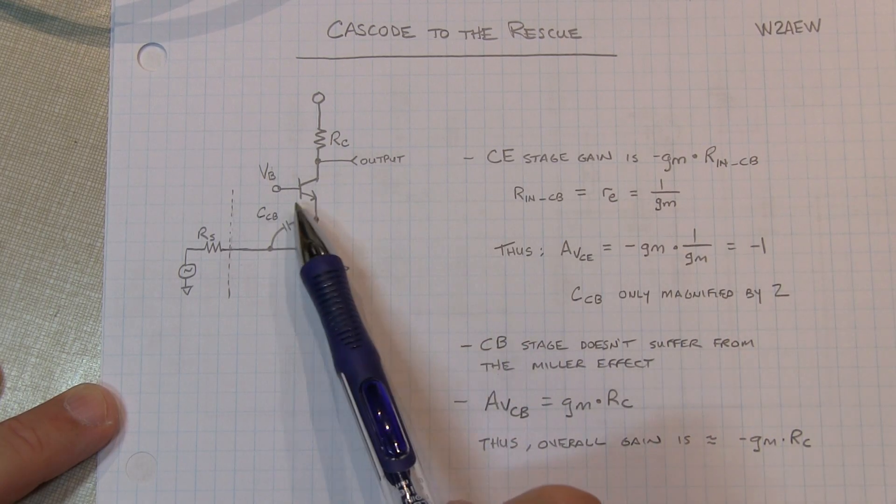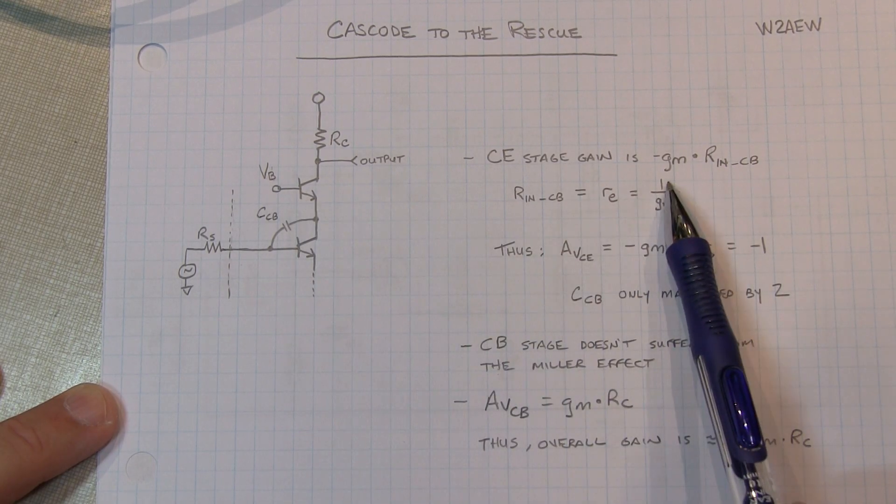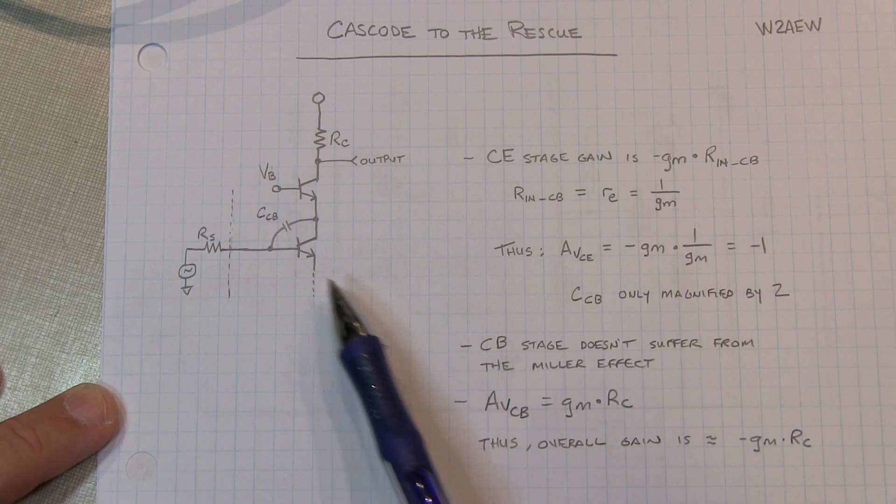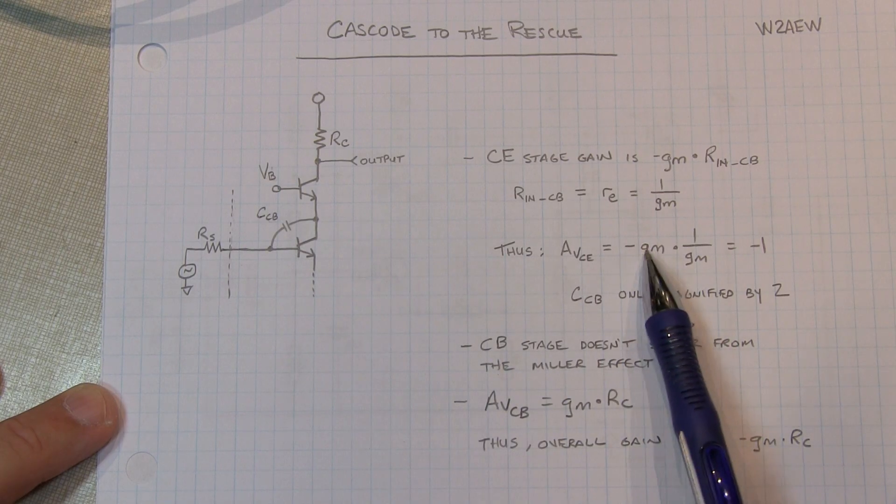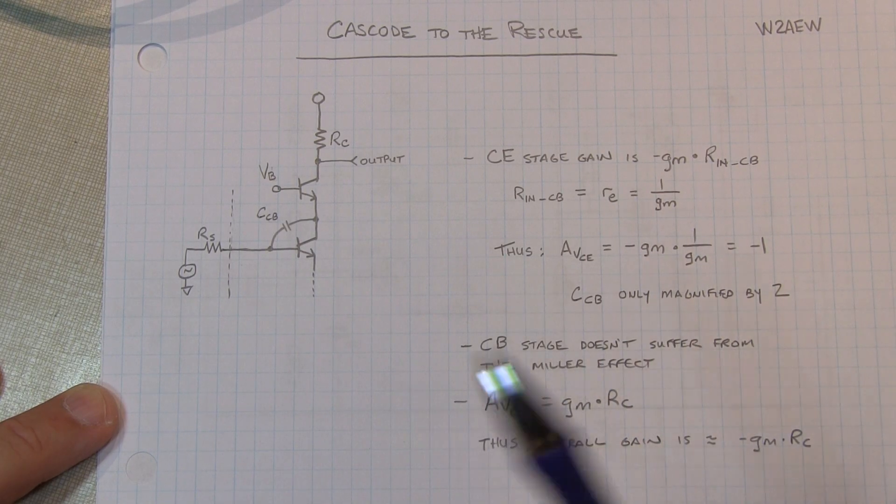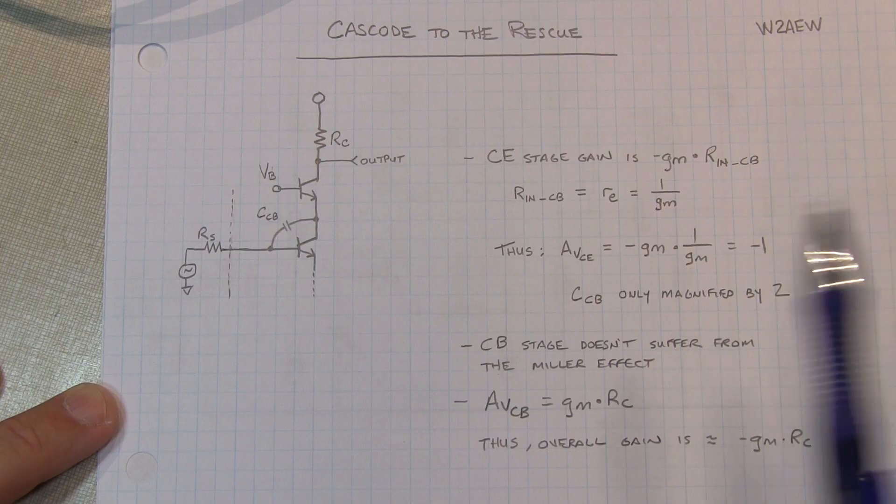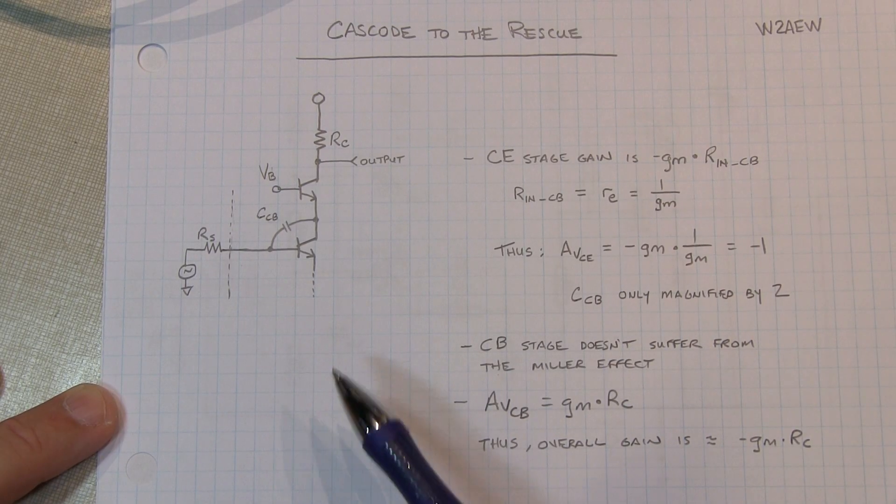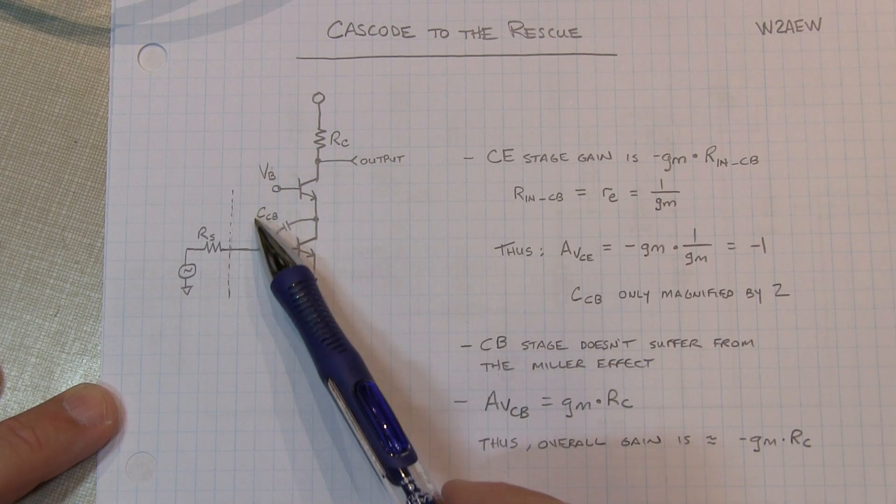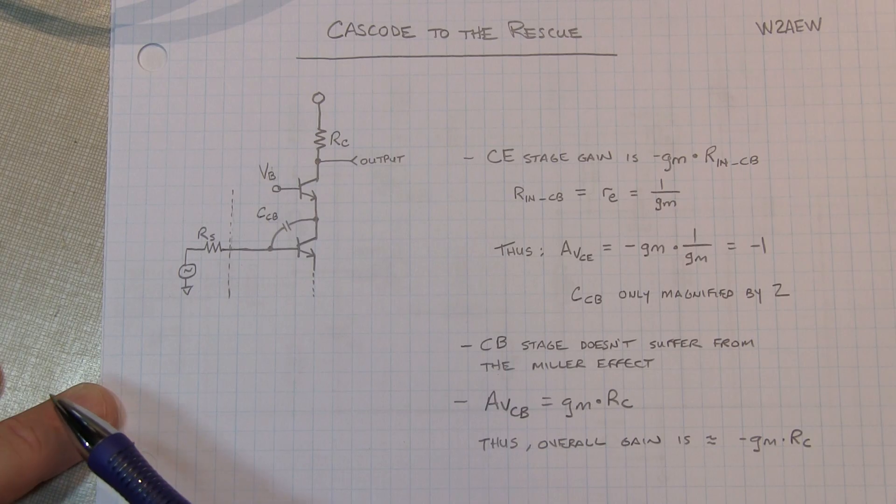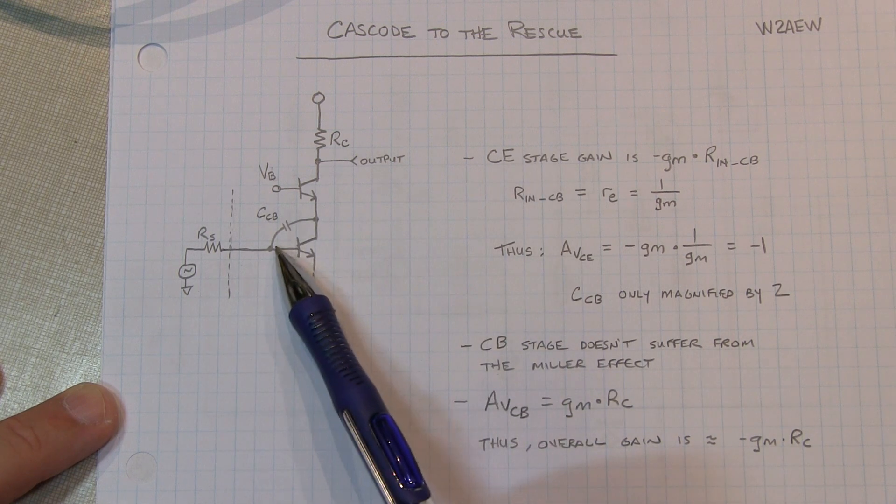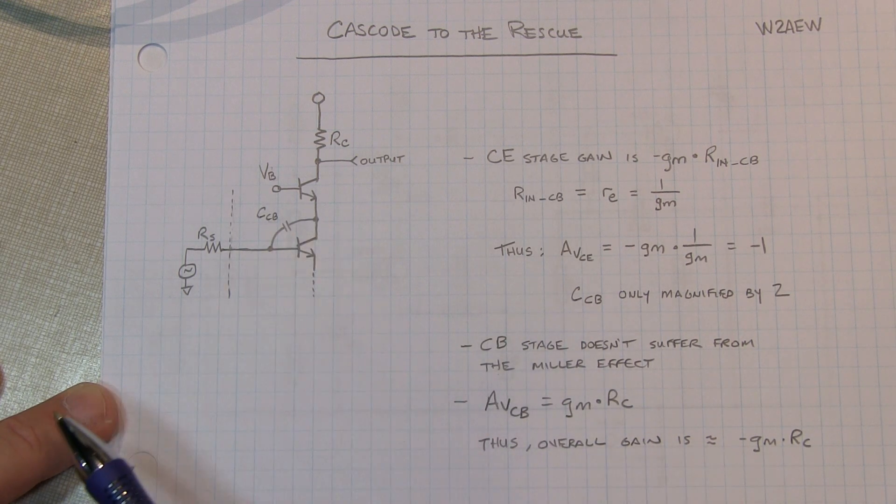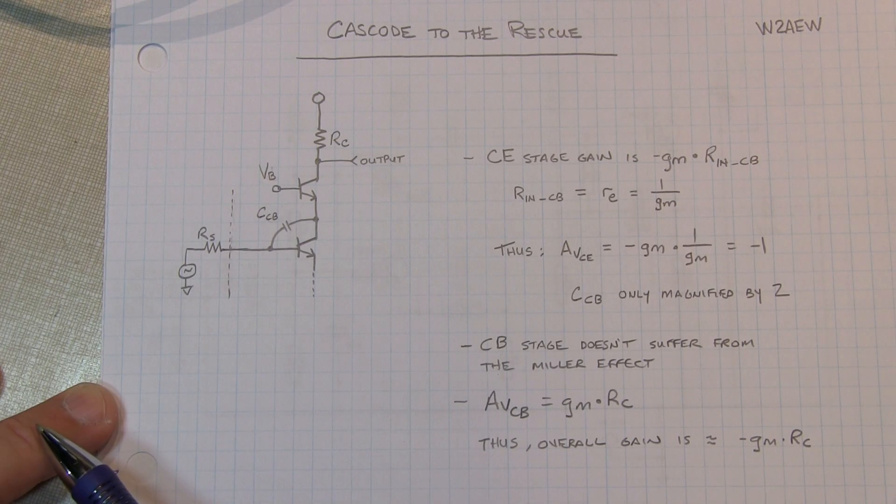Now the input resistance of a common base amplifier is equal to 1 over gm. Therefore the overall gain, or the gain I should say, of just the common emitter stage is equal to gm times 1 over gm, or simply unity, which is a simple minus 1. So the collector base capacitor like we described earlier in that particular case is only going to be magnified by a factor of 2. Therefore dramatically improving the bandwidth looking into that common emitter stage.